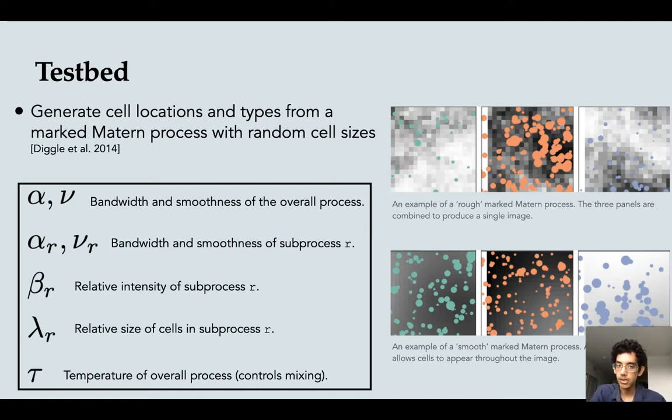So how do I generate images? I'm using a marked matern process. The top and the bottom are two examples of a marked matern process. The one on the top is a very rough process. You can see the changes in the probability of the different cells as you go in different regions. The bottom one is a very smoothly varying one. You can tell that there's a little bit more red on the top left than on the bottom right, but it's much smoother.